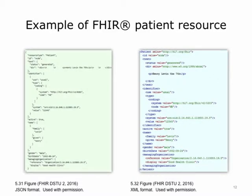Let's say you did a query for a specific patient. Here is an example of what the response instance would be for a patient named Henry Levin VII. The response could be represented in XML format, or alternatively in JSON format. Here is a comparison of how the same instance would look in JSON format versus XML format. Both formats are commonly used by application developers, so it is a matter of preference.